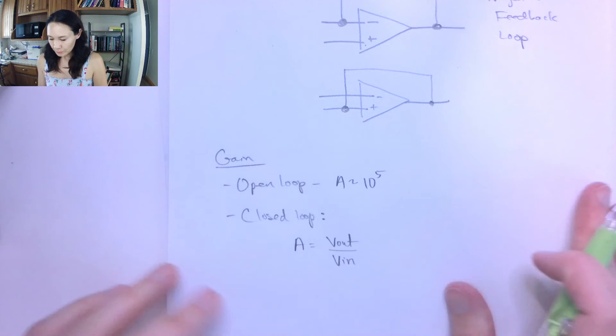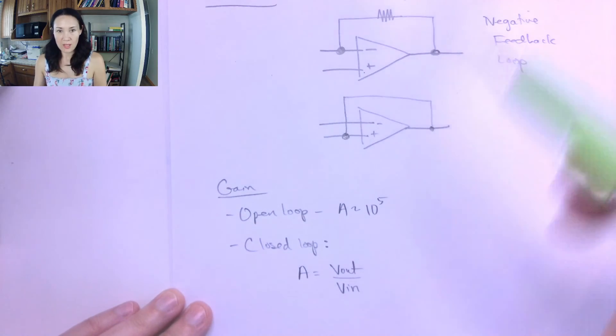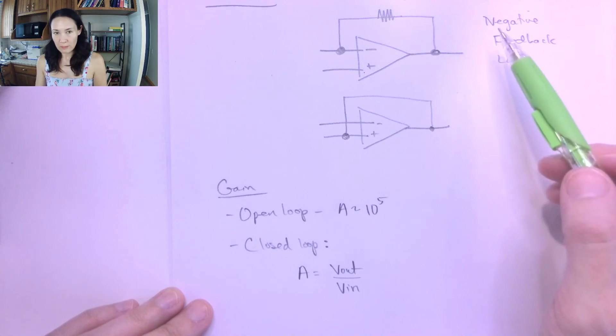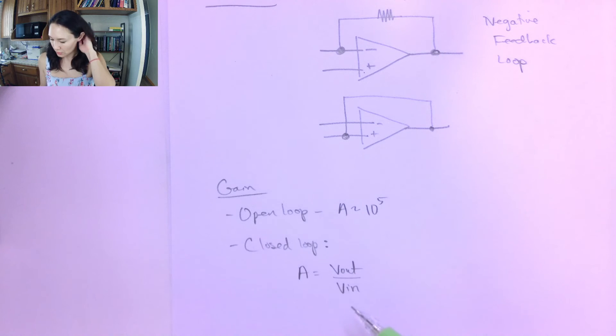So again, if you have a feedback loop, then you have closed loop gain. If you have no feedback loop, then you have open loop gain. Open loop gain is usually very large. Closed loop gain can be anything.